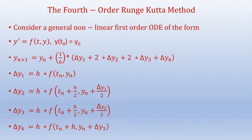The algorithm for the fourth order Runge-Kutta method is given as: y_(n+1) = y_n + (1/6)(Δy₁ + 2Δy₂ + 2Δy₃ + Δy₄), where Δy₁ = h·f(tₙ, yₙ), Δy₂ = h·f(tₙ + h/2, yₙ + Δy₁/2), Δy₃ = h·f(tₙ + h/2, yₙ + Δy₂/2), and Δy₄ = h·f(tₙ + h, yₙ + Δy₃).